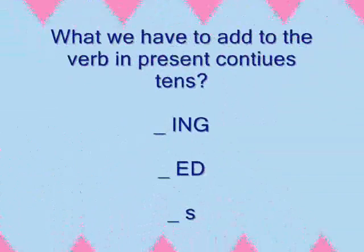Progress test: What do we have to add to the verb in present continuous tense? Number one: -ing. Number two: -ed. Number three: -s. And the answer is absolutely -ing.